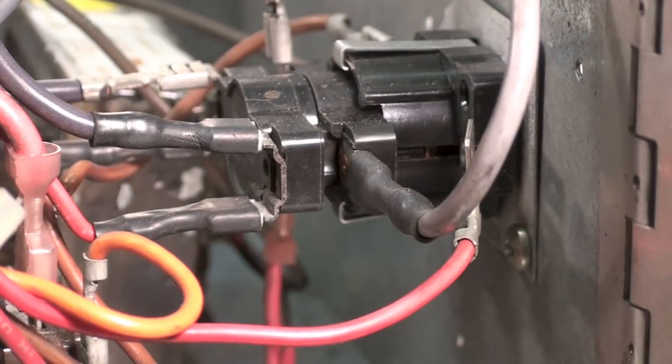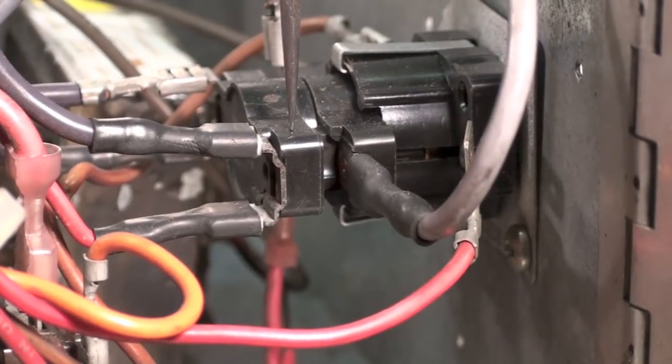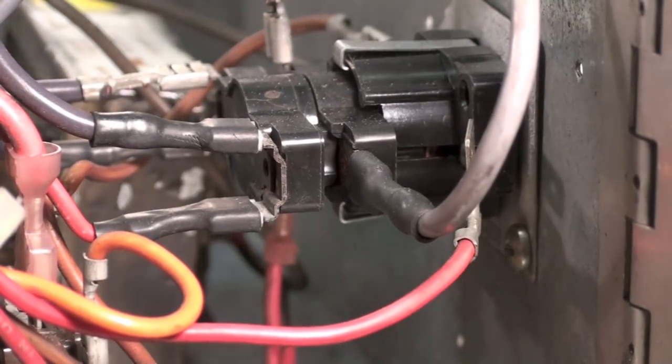The reason they set them up that way is when electric furnaces first came out, the transformers used in most residences—the pole transformers—really were not big enough to have large electric furnaces on them. They would kind of brown out if you turned on all the elements at the same time, so they came up with sequencers. It turns one on and then another one after the transformers had a chance to catch up.